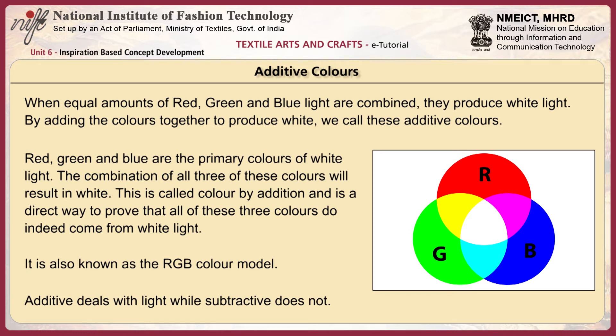When equal amounts of red, green and blue light are combined, they produce white light. By adding the colors together to produce white, we call these additive colors. Red, green and blue are the primary colors of white light, and the combination of all three will result in white. This is called color by addition and is also known as the RGB color model.